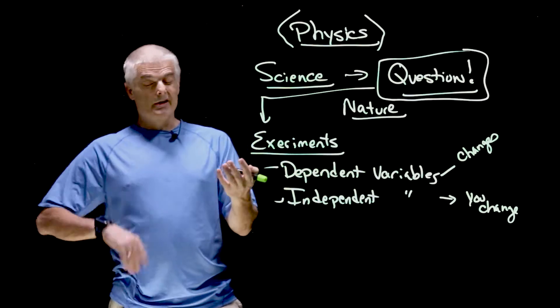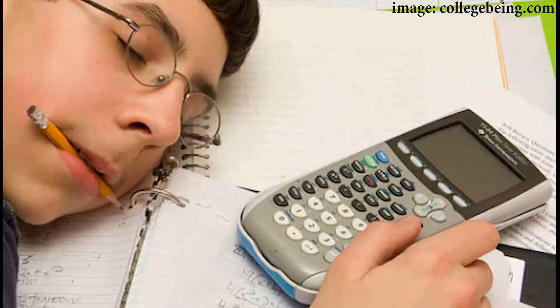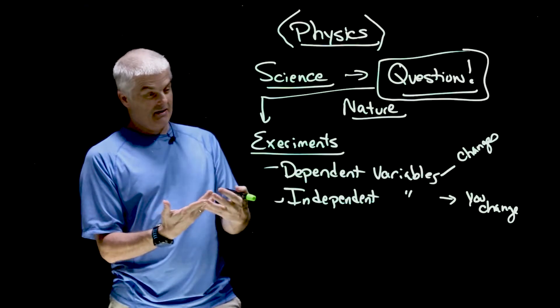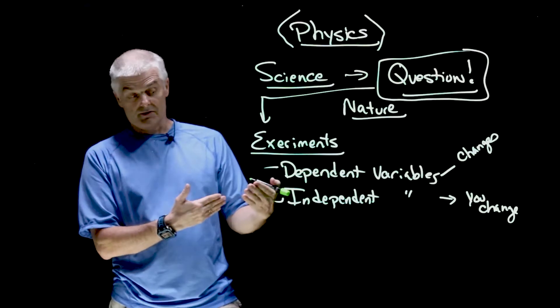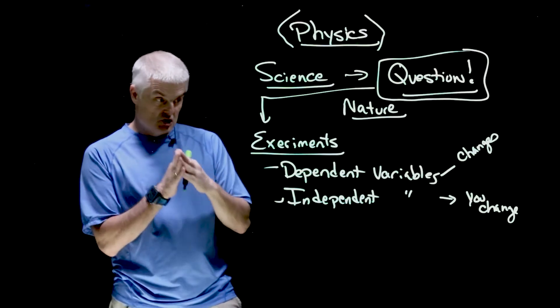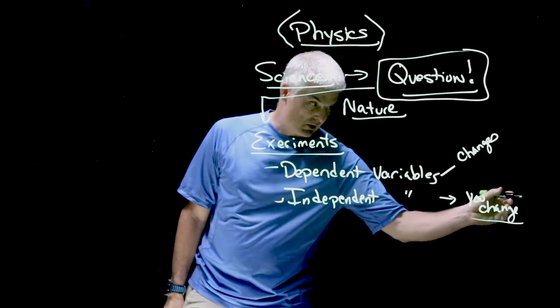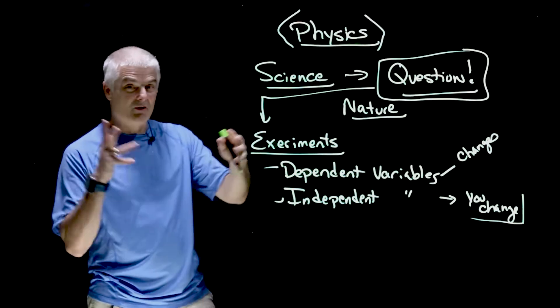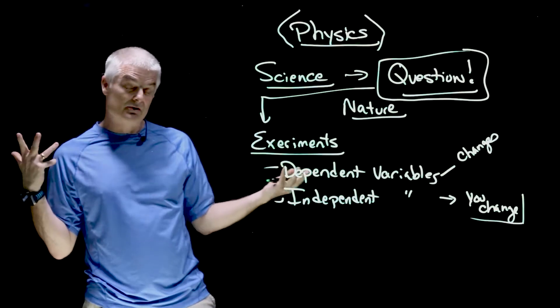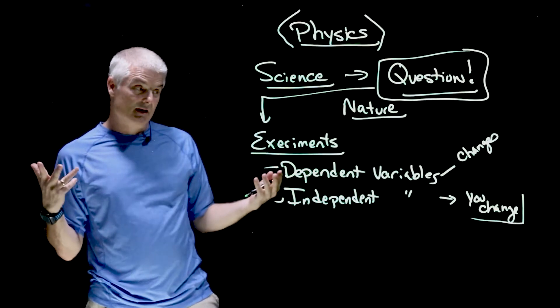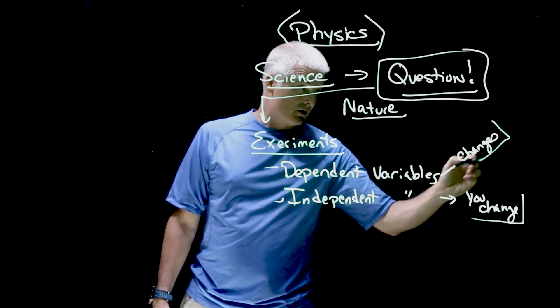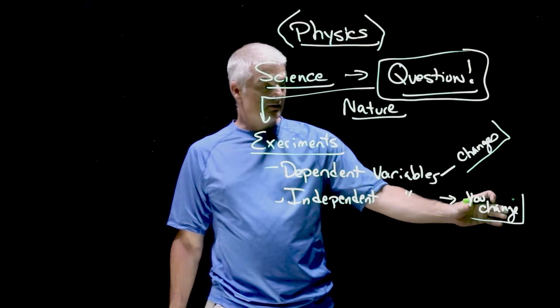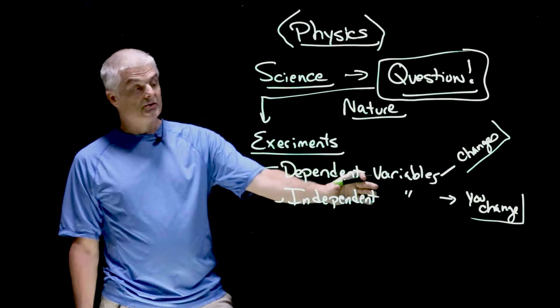So let's say you want to do a study on sleep and test scores. The hypothesis is the less sleep that you get, the lower your test scores. So the thing that I would change as the experimenter is I would give some of you three hours of sleep and some four and some five and some eight and some ten hours of sleep, and we'd monitor how well you did on the test the next day. The score is the dependent variable. The independent variable is what I can change as the experimenter, which is time.